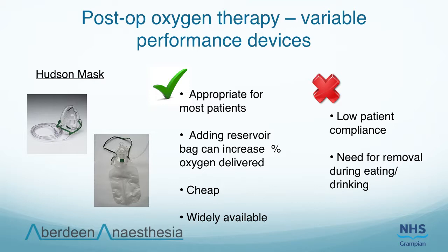The mask does not form a tight seal around the patient's face and has holes in the sides, through which room air is drawn in. The addition of a reservoir bag to these masks increases the attainable percentage of oxygen. Oxygen is supplied to the reservoir bag which fills during expiration. During inspiration, 100% oxygen is drawn from the reservoir. Some air is still entrained around the mask and so the oxygen percentage delivered remains variable at around 60 to 80%. Expired gas is vented through the side holes and around the mask, with a valve and the oxygen flow preventing expired gas from entering the reservoir. Hudson masks are cheap and widely available but there is low patient compliance and they must be removed for eating and drinking.